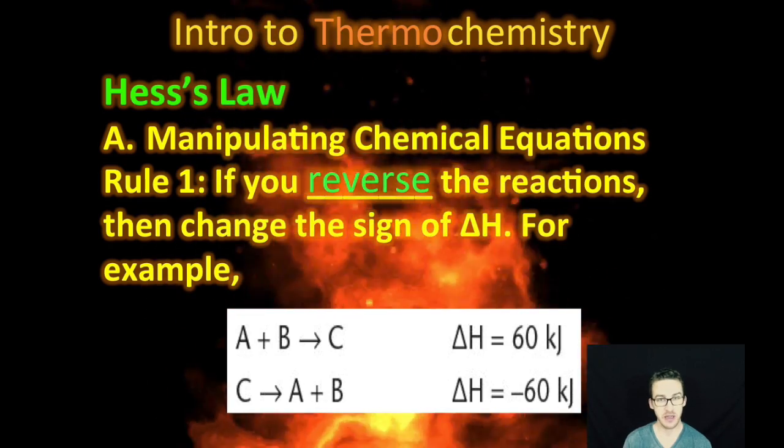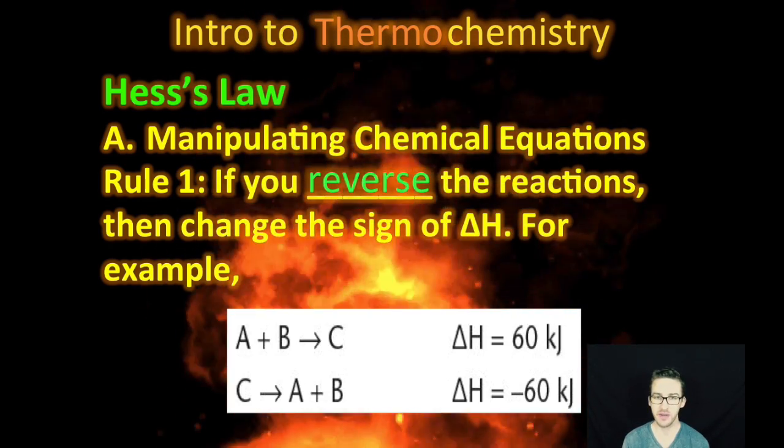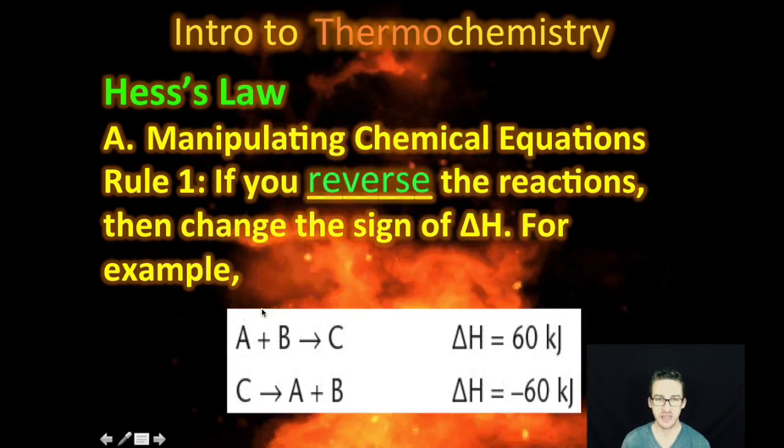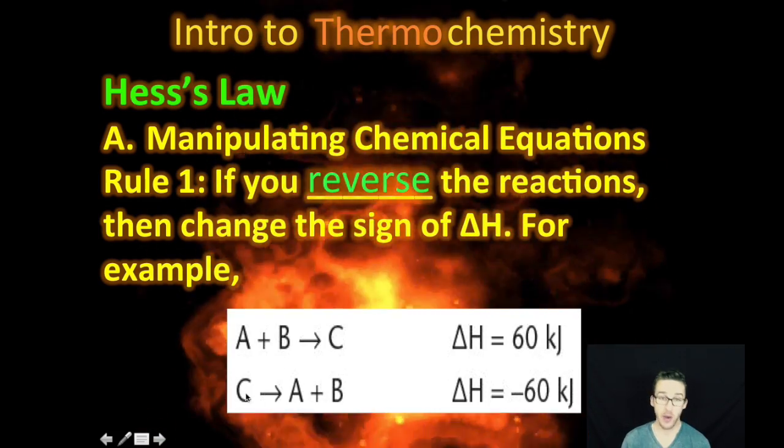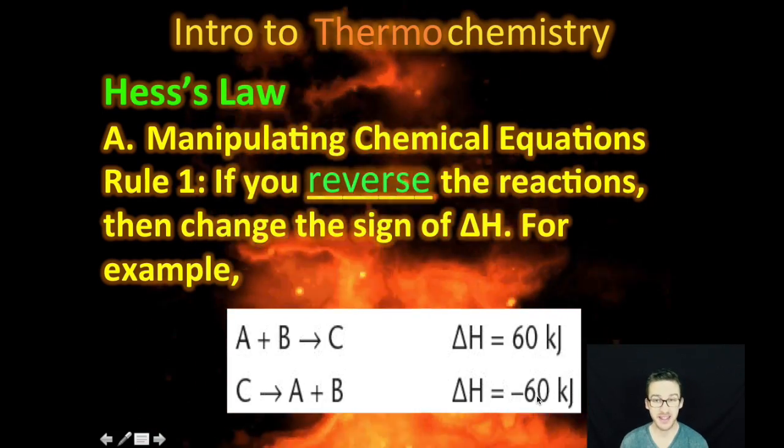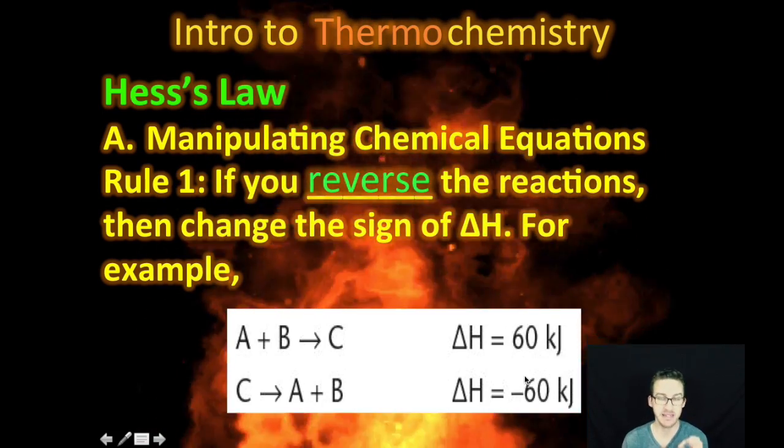So, as you look at the reactions on your screen there and as you look at your notes, notice that this equation would have a positive enthalpy change of 60 kilojoules. However, if we reverse it, the enthalpy change becomes negative. Same magnitude, but different sign.